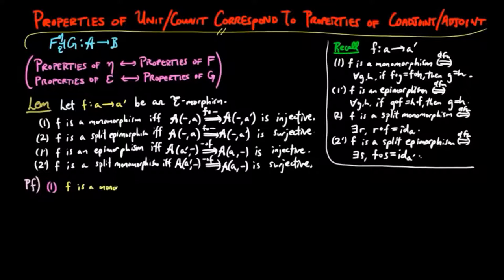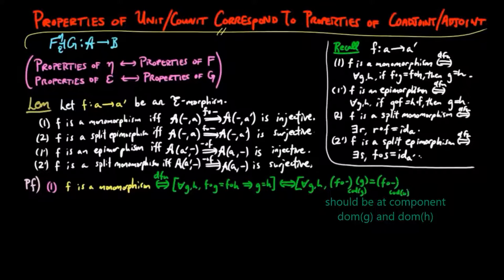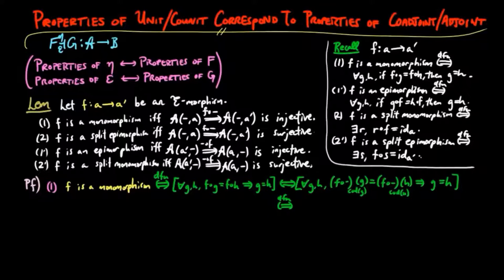The proofs are straightforward. For (1), F is a monomorphism if and only if by definition for each compatible e-morphisms G and G', if F∘G equals F∘H, then G equals H. And this is true if and only if for compatible G and H, the post-composition map at components of the domain of G, which equals the domain of H, have equal values at G and H, which implies G equals H. But this is the definition of the post-composition by F natural transformation being injective, since G and H were arbitrary.